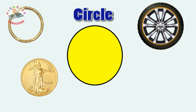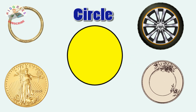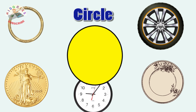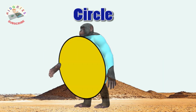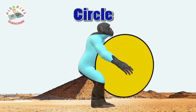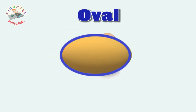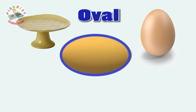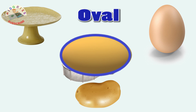Circle and a plate. Oval shape — an oval shape represents an egg, a potato, and an oval shape mirror.